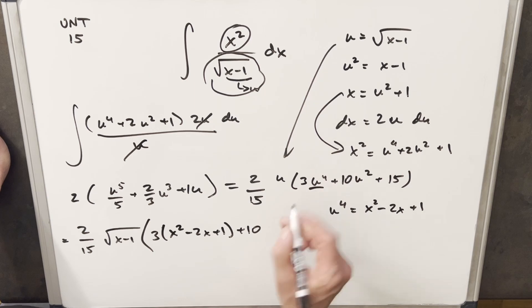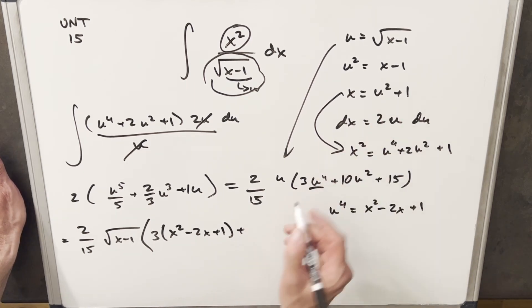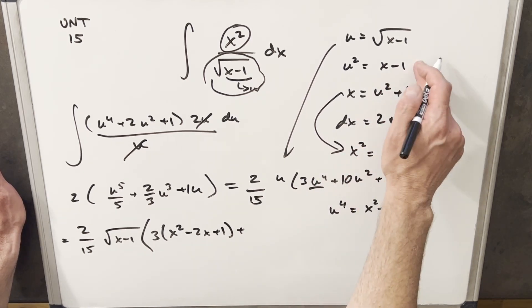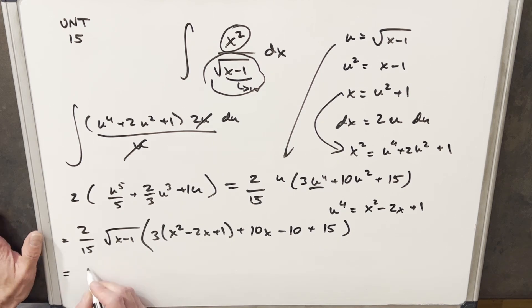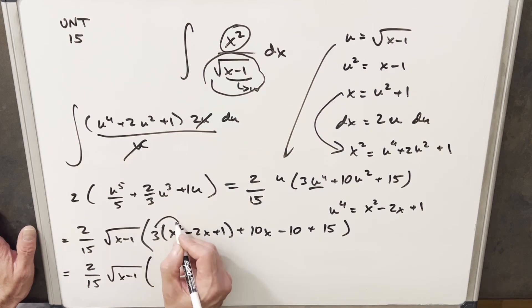We'll have our 10. u squared is x minus 1. I think for this term, I'll just multiply it in right now, because it's going to be easy. 10 times x minus 1 is going to give us 10x minus 10. And then we're just going to have 15. And then let's see if I can squeeze in the final solution right here. So we're going to have 2 over 15, square root of x minus 1.